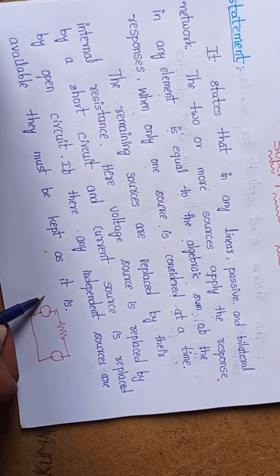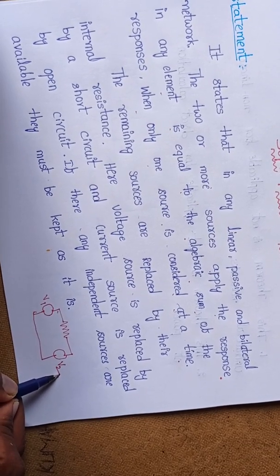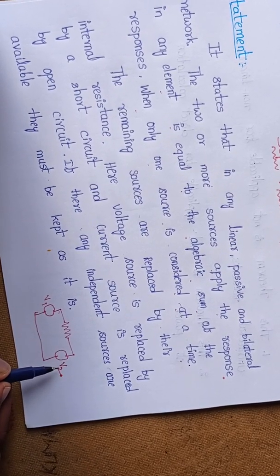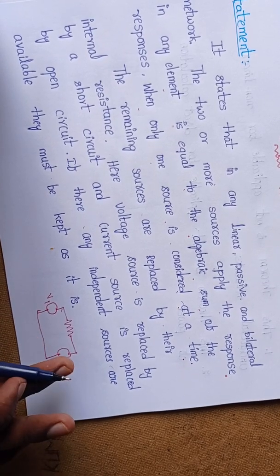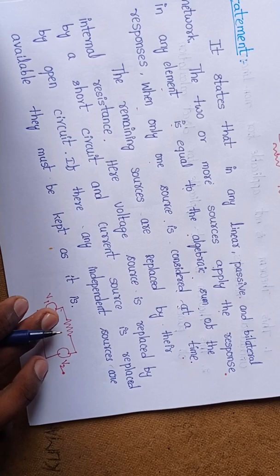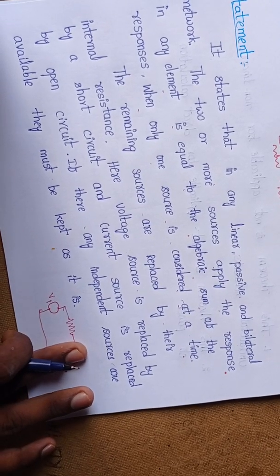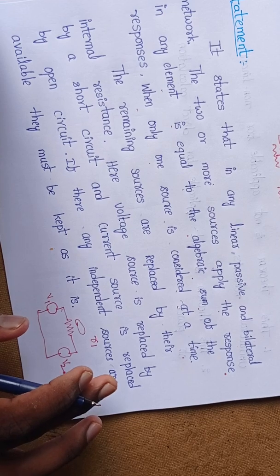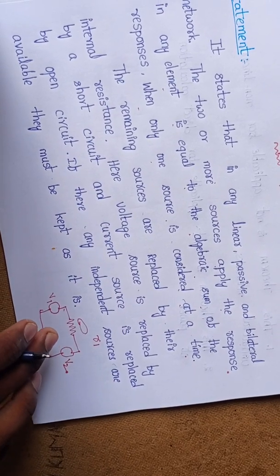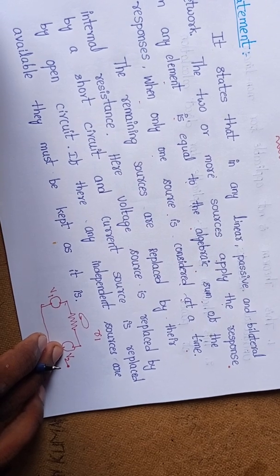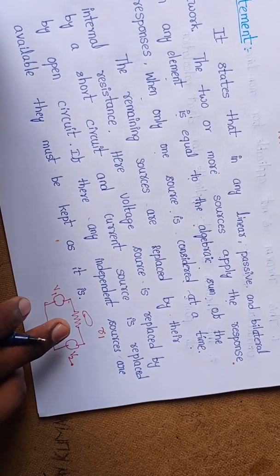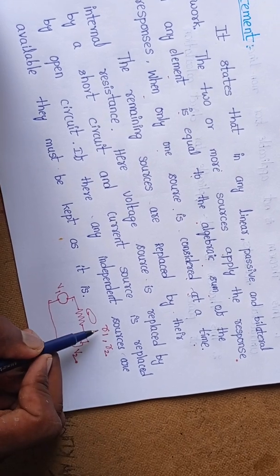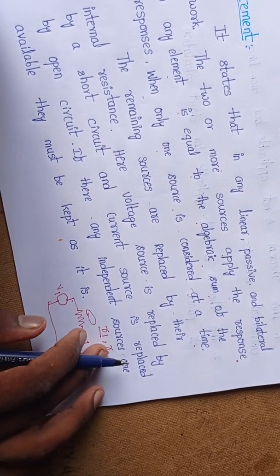Consider a circuit with one voltage source V1 and another voltage source V2. Superposition theorem says: first apply V1 while keeping V2 as zero — the response through the resistor is R1. Next, take V2 as your source and set V1 to zero — the response in the resistance is R2.